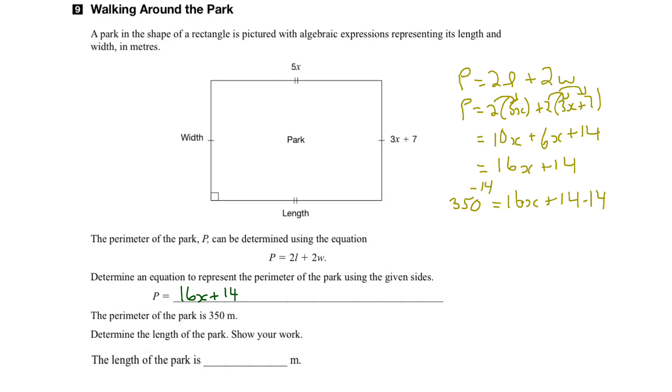So this would give us 336 equals 16x, because here these 14s would cancel out. Next then we would divide both sides by 16. And here the 16s would cancel, leaving us with x. And then all we have to do is figure out what 336 divided by 16 is.